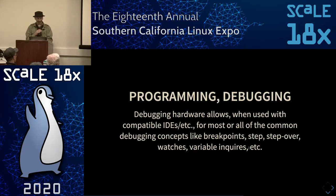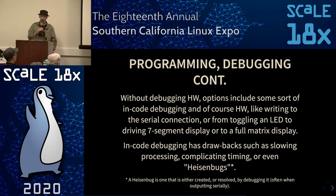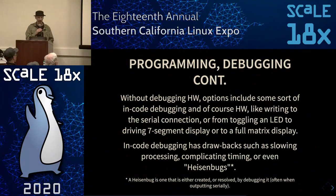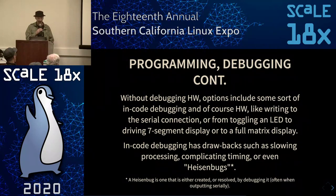Debugging microcontrollers gets interesting. In the best case you can use breakpoints, step-overs, and watches — like the Black Magic Probe for ARM, which is like magic. If you don't have hardware debugging, you can write through a serial connection, toggle an LED, or drive a seven-segment display with an error code. The downside is these all take system cycles, so if you're doing something timing-sensitive, taking time out to write to an LED messes up your timing — these are called Heisenberg bugs.